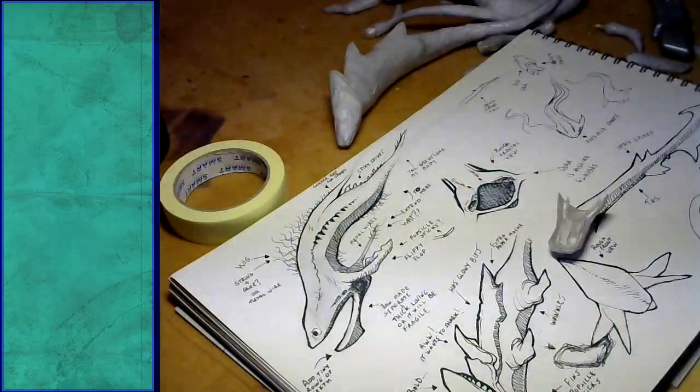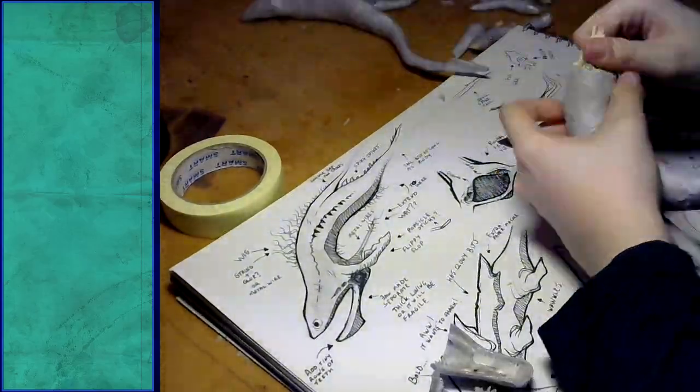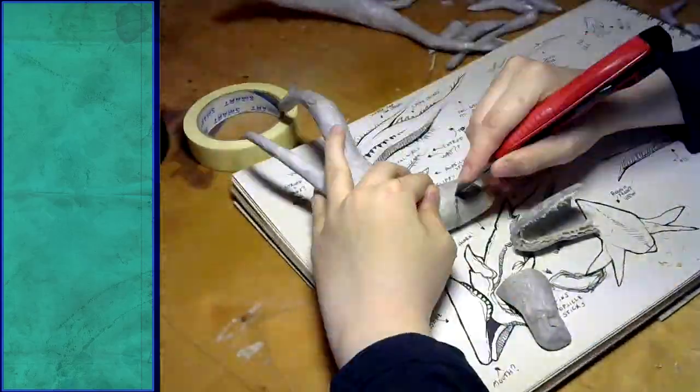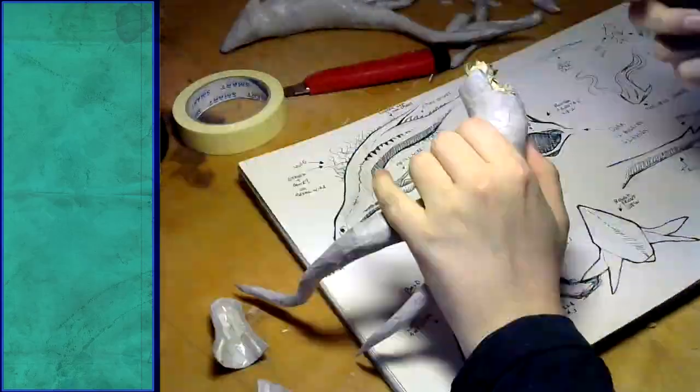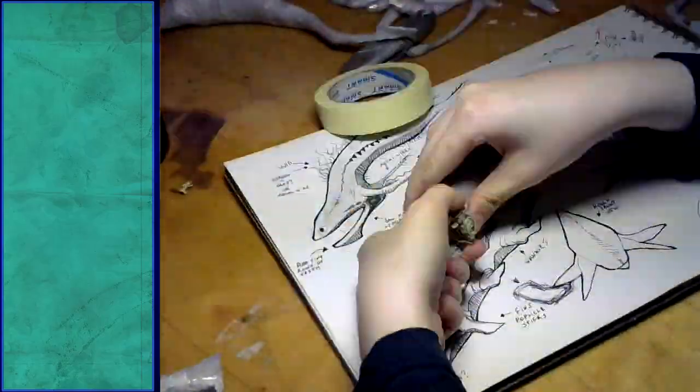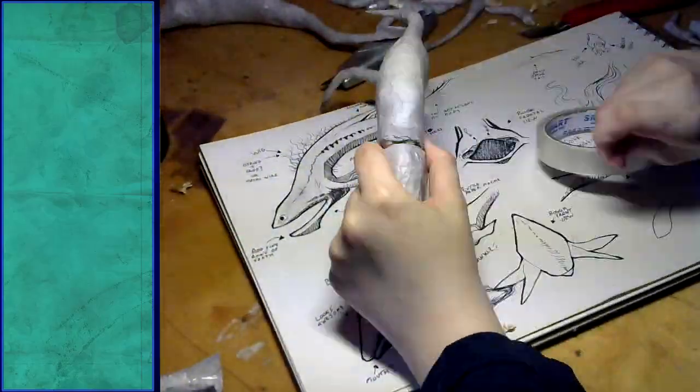I cut the mouthpiece where it would naturally open and got rid of the backside because it would just get in the way. I also added several tiny rows of teeth to the mouth. It wasn't in the original design, but I thought it would look really good.